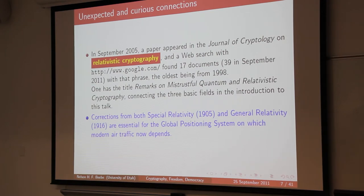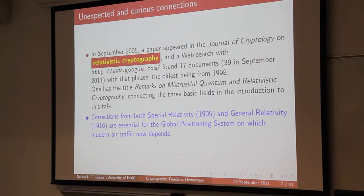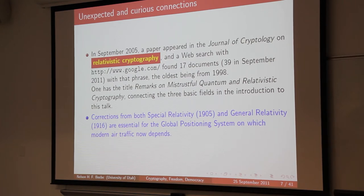Going back to relativity — aside from helping to explain how galaxies evolve and move — the primary practical application of relativity has been in GPS devices. It turns out you need corrections from both special relativity, Einstein's 1905 theory, and general relativity's 1916 theory involving the mathematics of curved spaces. Both of those corrections are essential for all modern air traffic, both commercial and military. My brother-in-law, a retired navigator in the Indian Air Force, said that by the 1990s all the world's air forces had essentially given up the notion that you needed a navigator — now there's a little device called a GPS.